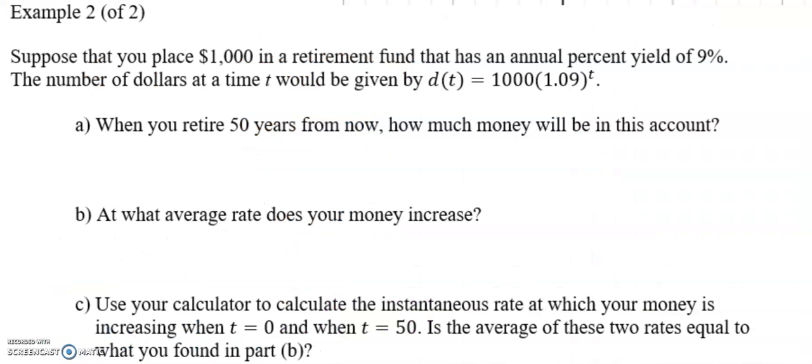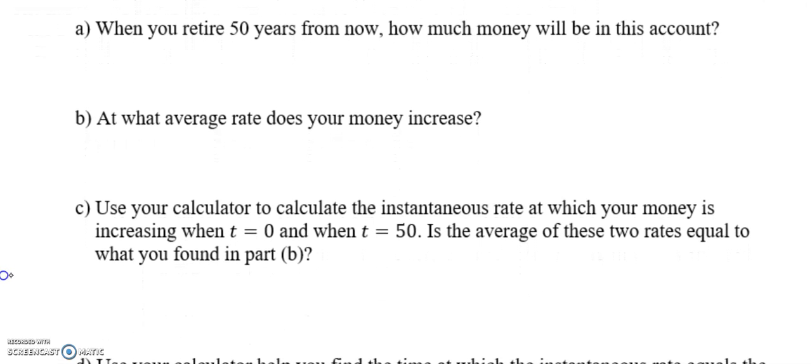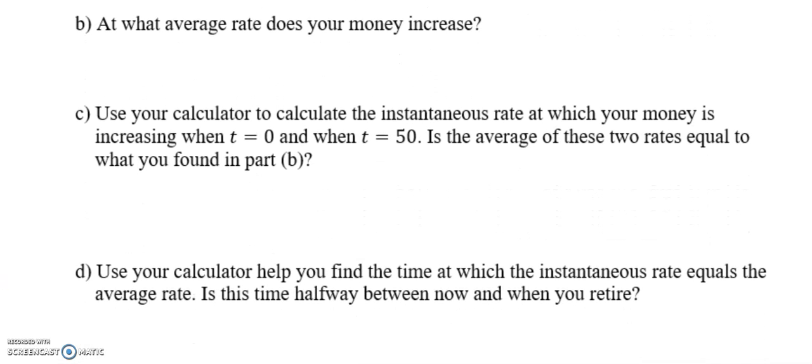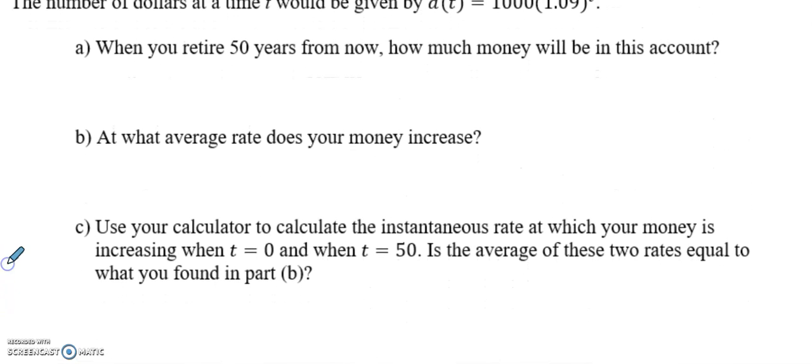Suppose that you place $1,000 in a retirement fund that has an annual percent yield of 9%. The number of dollars at a time t would be given by D(t). 1,000 is your initial investment, 1 plus the .09 being the rate raised to the time t. When you retire 50 years from now, how much money will be in this account? At what average rate does your money increase? Use your calculator to calculate the instantaneous rate at which your money is increasing at zero. And use your calculator to help you find the time at which the instantaneous rate equals the average rate. Okay, so I'm going to set you up with each one of these.